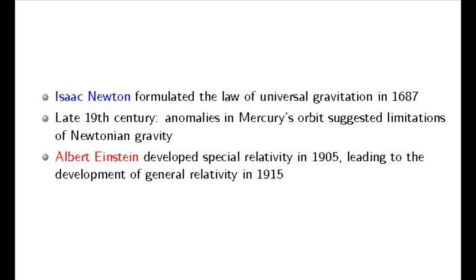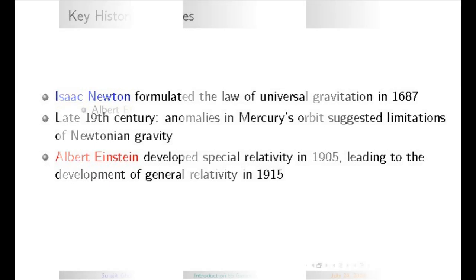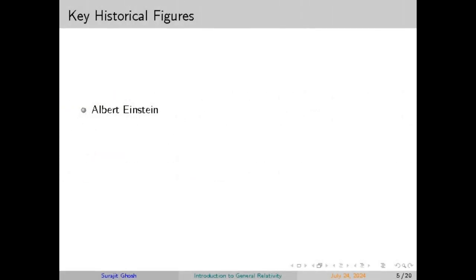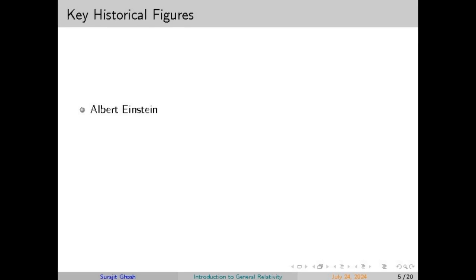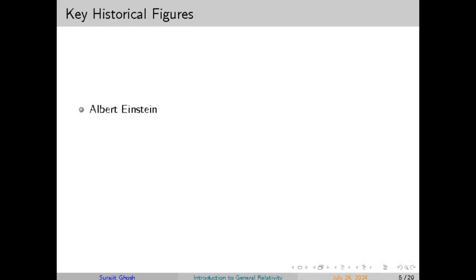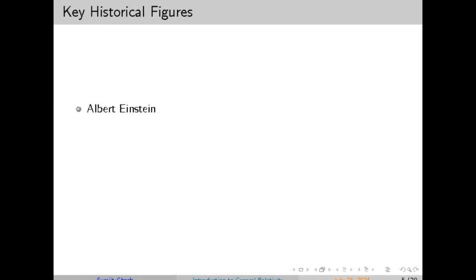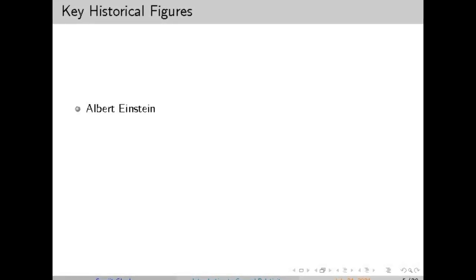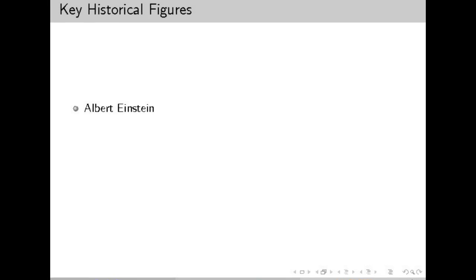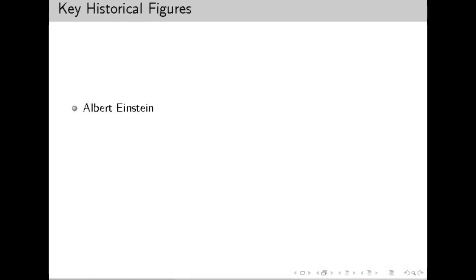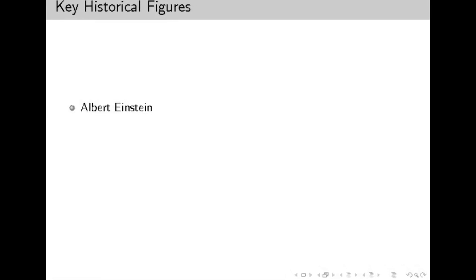General relativity also plays a crucial role in our everyday technology. The precise timing of GPS satellites must account for the effects of both special and general relativity to provide accurate location data. Without these corrections, our GPS systems would be off by several kilometers.